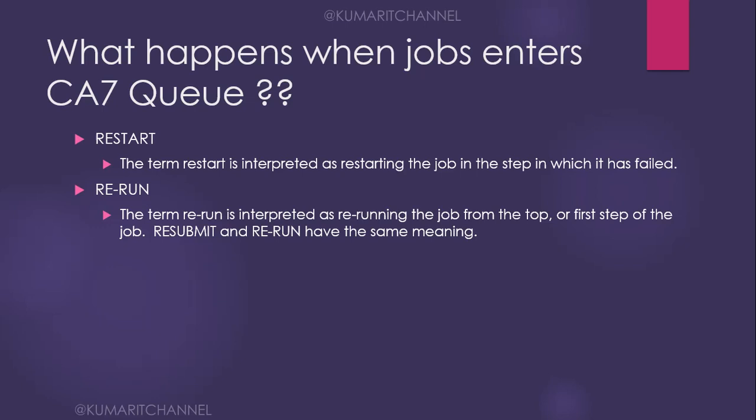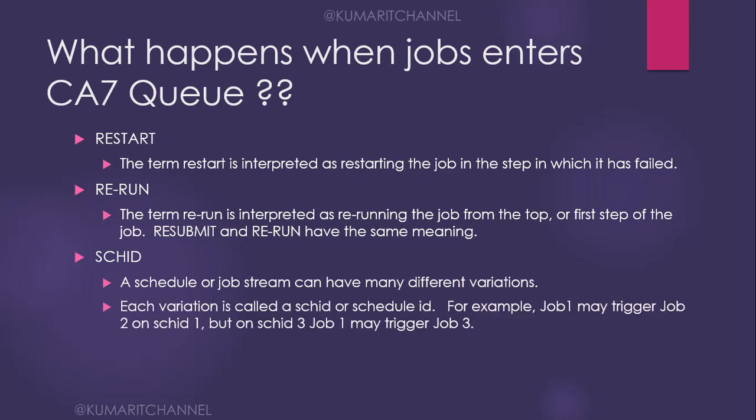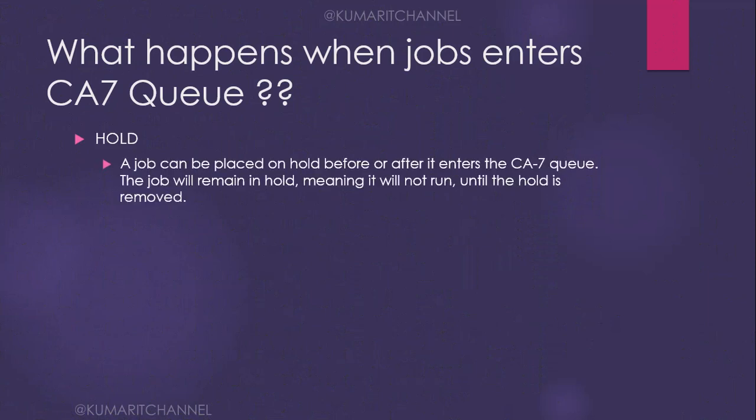Schedule ID: a schedule or job stream can have many different variations, and each variation is called a schedule ID. Within 24 hours there will be a set of jobs that need to execute at regular intervals — every two, four, or five hours — and those are scheduled as schedule one, schedule two, schedule three, or morning, afternoon, and evening schedules. We can also put a job on hold for a certain period of time and then release it.